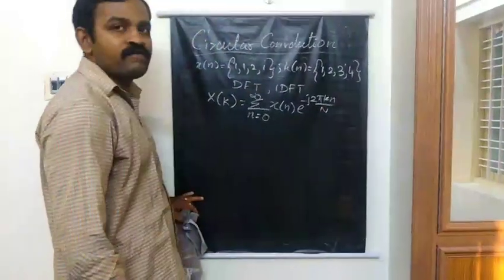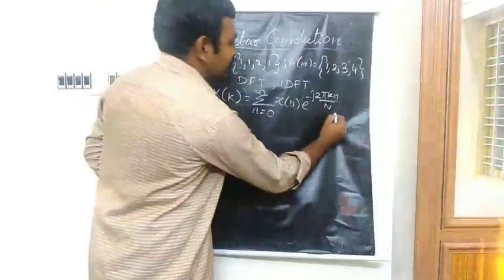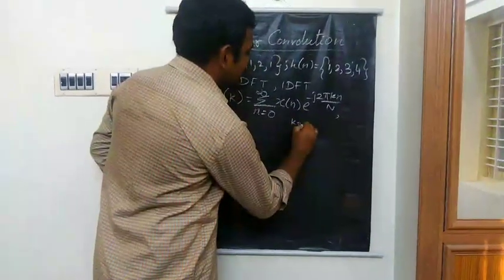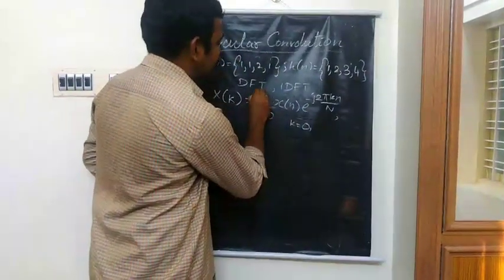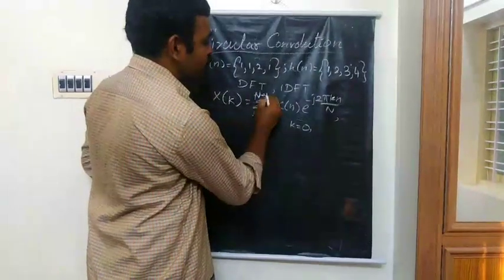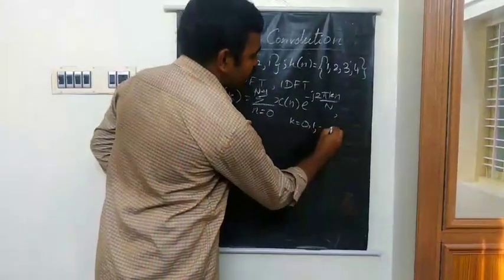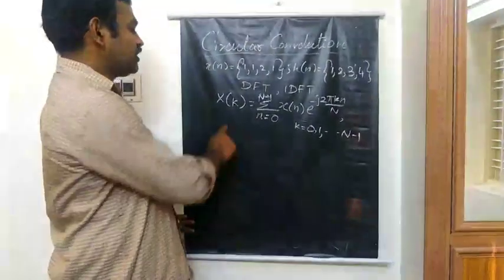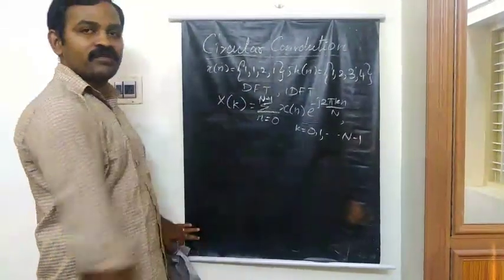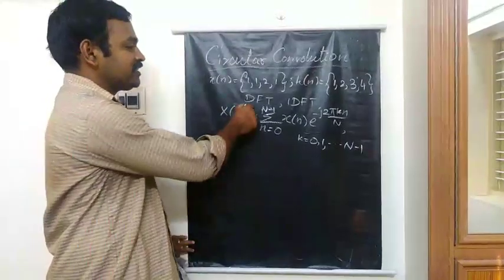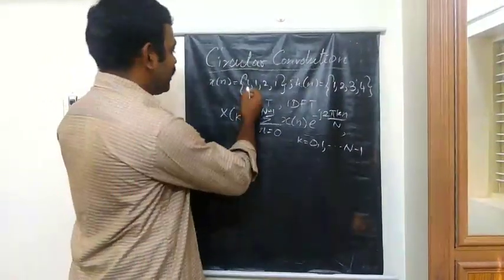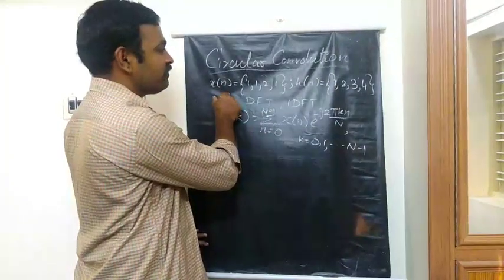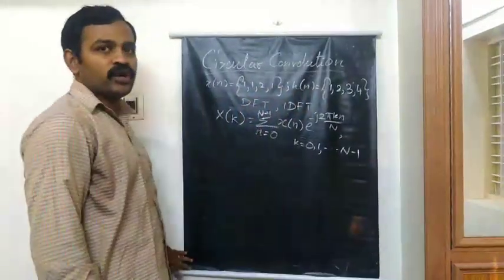So this is the formula of Fourier Transform, where k varies from 0 to n minus 1, n varies from 0 to n minus 1. So this is the forward Fourier Transform formula. We are applying for X1 of k as well as H1 of k.